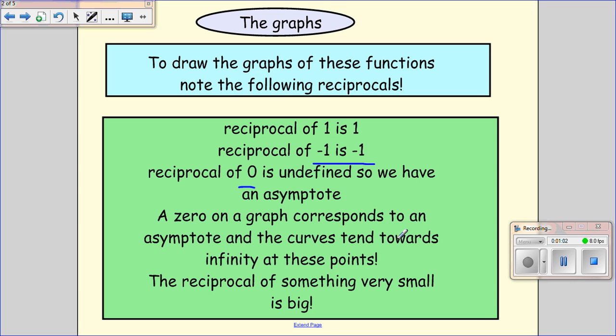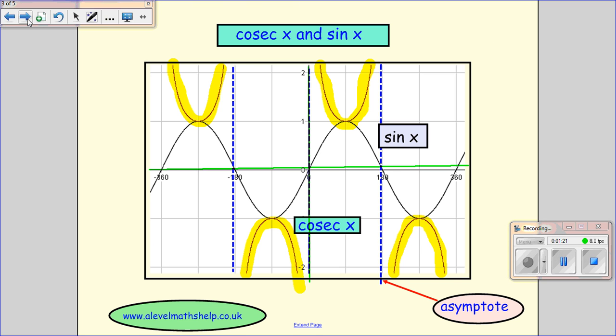This means a 0 on a graph corresponds to an asymptote on the reciprocal graph, and the curves tend towards infinity. The reciprocal of something very small is big, so as you approach 0, you're going to something big. So if you can draw the sine, cos, and tan graph, you should be able to draw the reciprocal graphs.